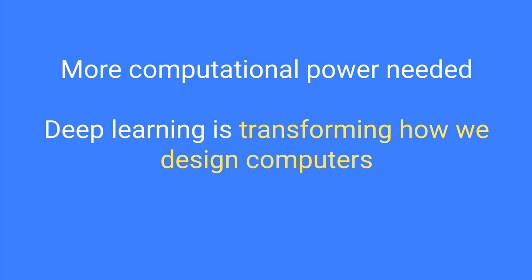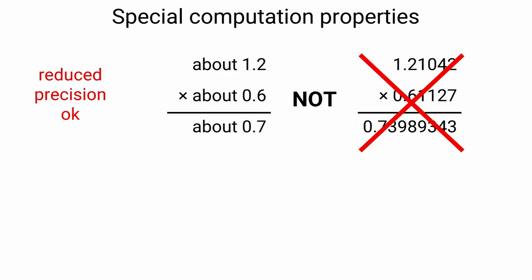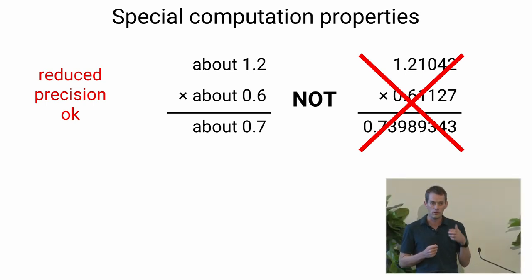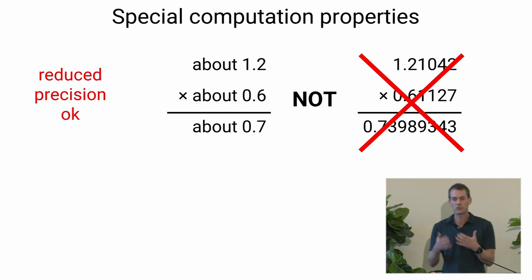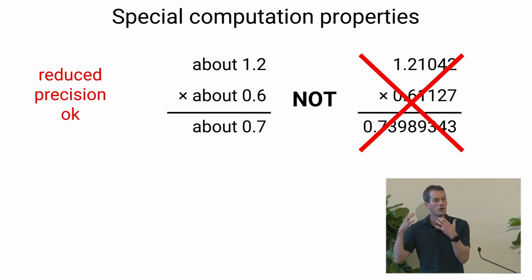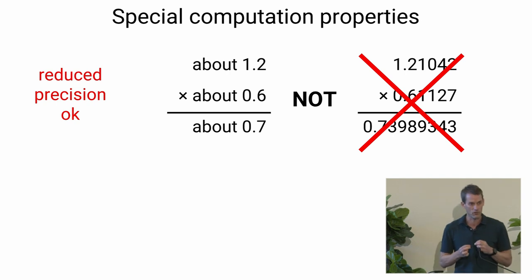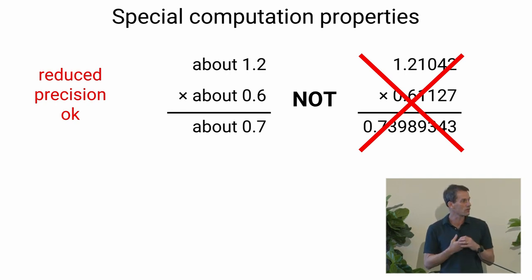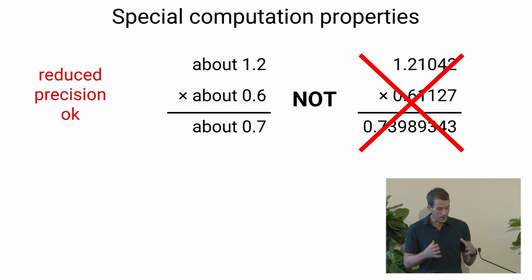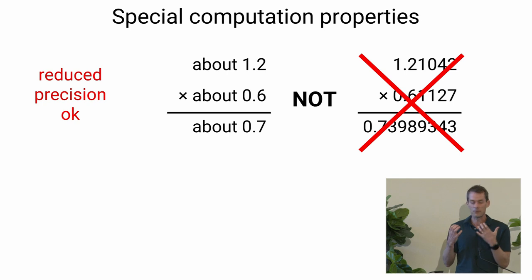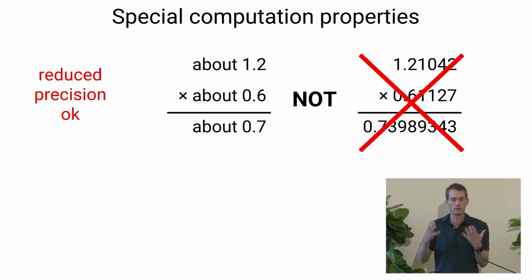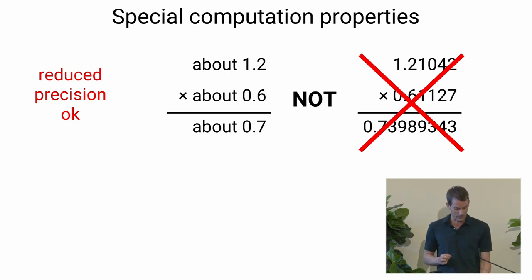I really think deep learning in particular is transforming how we design computers. Deep learning has two special properties. First, as Bill highlighted, reduced precision is okay. You need very little precision for inference, and you need less precision than the traditional HPC community has been used to, even for training. 16-bit floating-point formats work just fine, and probably with more work on the research and algorithm side we can get that even lower. Reduced precision is a really nice property when building high-performance computing devices, because it means you can have more multipliers without worrying about the seventh significant digit.